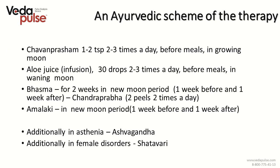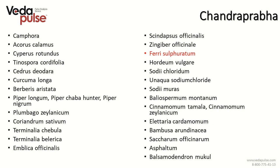An Ayurvedic scheme of therapy: Chyavanprash, 1–2 teaspoons three times a day before meals in the growing moon. But it is not enough as we need to influence Ranjaka Pitta, and the best plant for this purpose is aloe — aloe juice or aloe infusion, 30 drops two to three times a day before meals in the waning moon. It is also important to take remedies containing iron such as Bhasma for 2 weeks in the new moon period, and Chandra Prabha. We can also take Amalaki in the new moon period, one week before and one week after. Additionally, Ashwagandha and Shatavari. Chandra Prabha consists of a wide variety of plants such as Piper longum, Plumbago zeylanicum, Emblica officinalis and others.